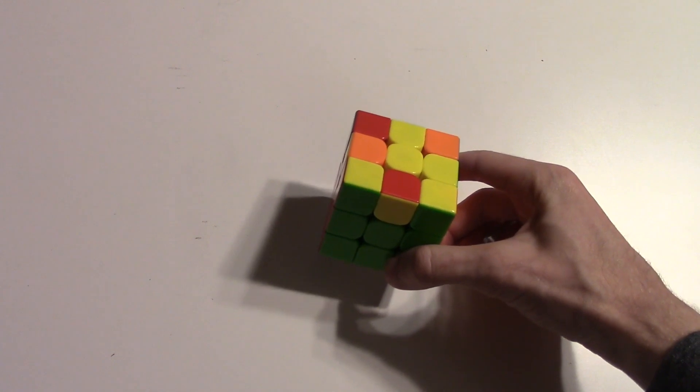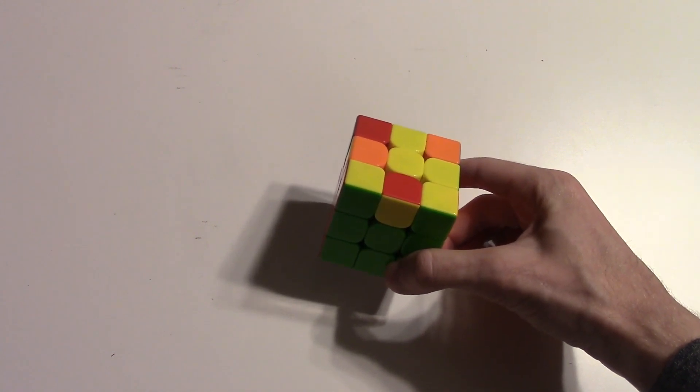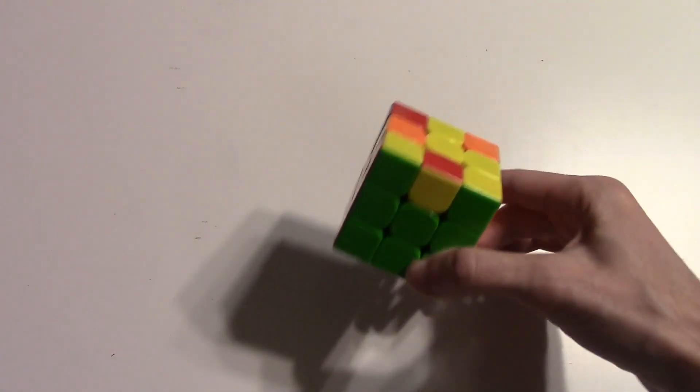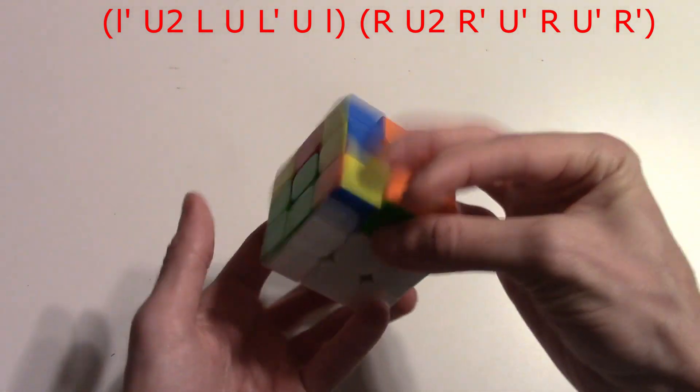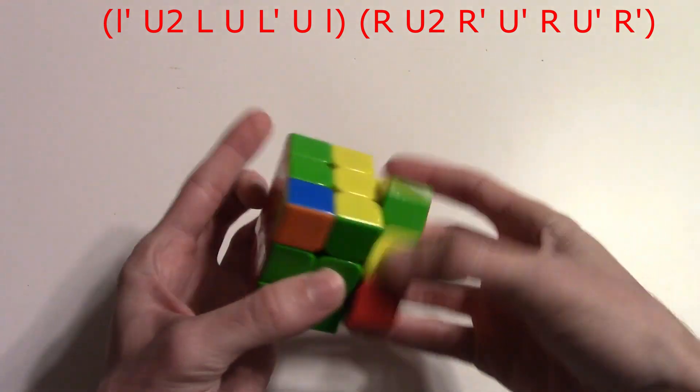I've got a different algorithm which I think is just a lot faster than doing double sledge double sexy. You're just going to do wide lefty anti-sune and then righty anti-sune.